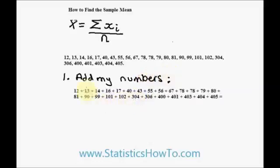So if I add all of those numbers up, 12 through 405, I get 3744.